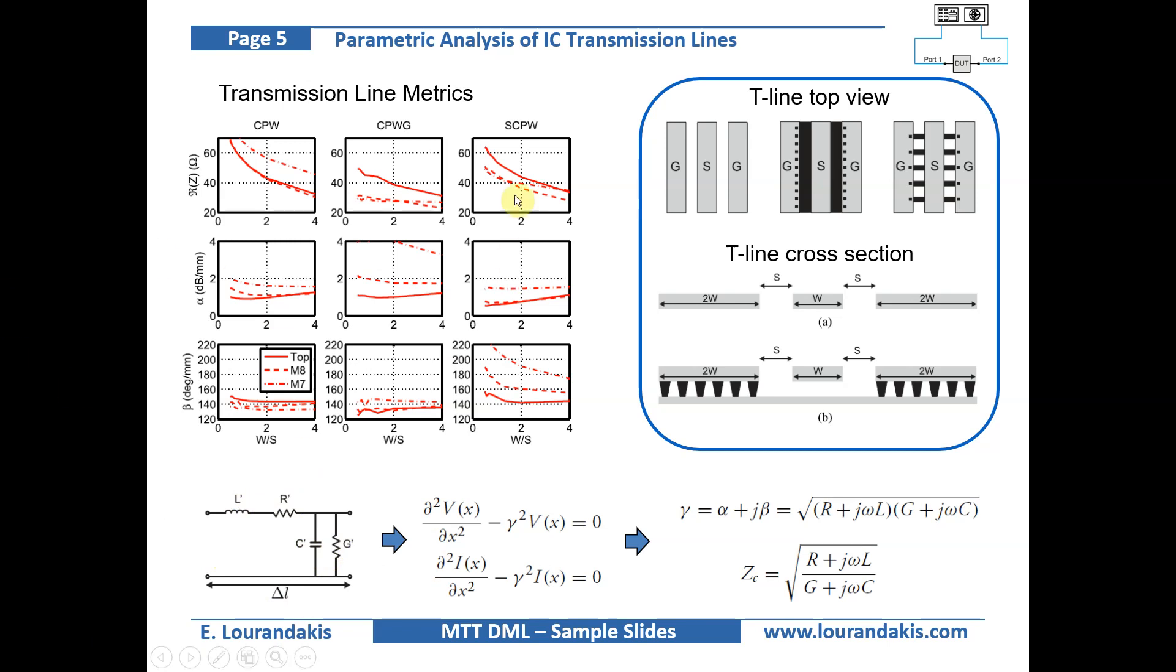On the left we see a parametric analysis of how the transmission line matrix change with wiring geometry parameters. From the cross sections we can see the width over spacing ratio which is used on the x-axis for the parametric analysis. For each transmission line type we witness how much the matrix change while sweeping the width over spacing ratio.